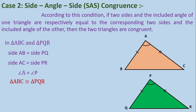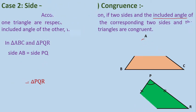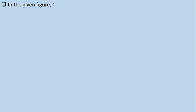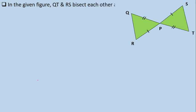In the statement of SAS congruence, we used the term 'included angle.' This means the angle should lie between the two sides of the given triangles. Now let's understand SAS congruence through an example from the book: in the given figure, QT and RS bisect each other at P.